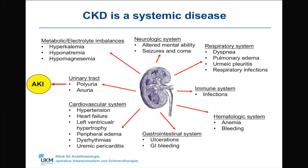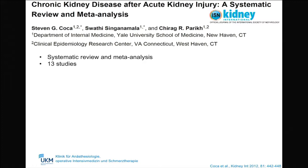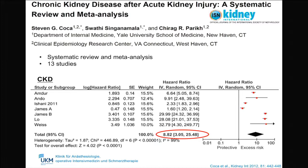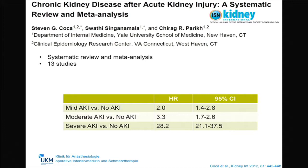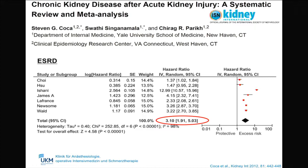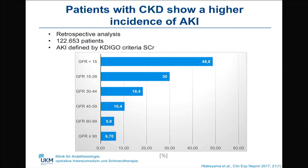A systematic review and meta-analysis including 13 studies estimated the risk of chronic kidney disease and end-stage renal disease in patients with and without acute kidney injury. The results show that patients with acute kidney injury have an 8.8-fold increased risk for the development of chronic kidney disease. The higher the severity of AKI, the higher the risk — about 28.2-fold in patients with severe AKI. Patients with AKI also show a 3.1-fold increased risk for end-stage renal disease.